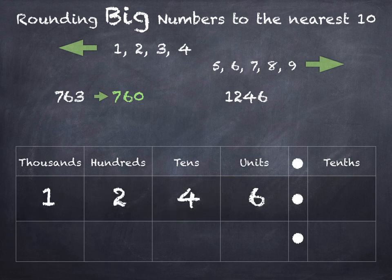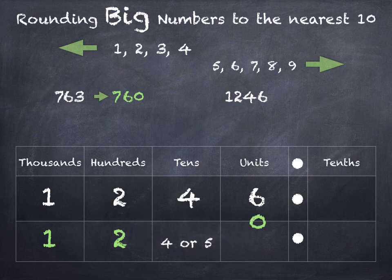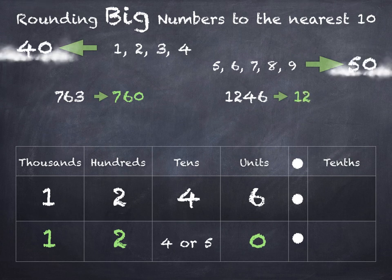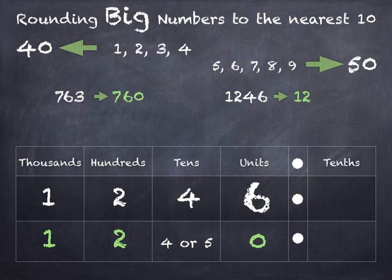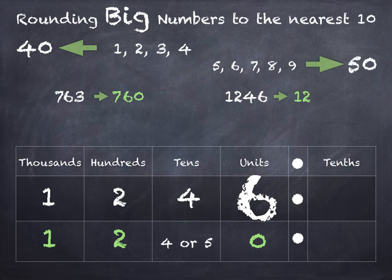What about 1,246? The thousand and the hundreds will stay the same. The tens is the one we're going to change — that will be 4 or 5 — and the units will be 0. To decide whether the tens is a 4 or a 5, whether we're going to round down to 40 or up to 50, we look at the units. The units is 6, and 5, 6, 7, 8 and 9 always round up. So we'll be rounding up to 50, meaning we need a 5 in the tens column. 1,246 rounds to 1,250.